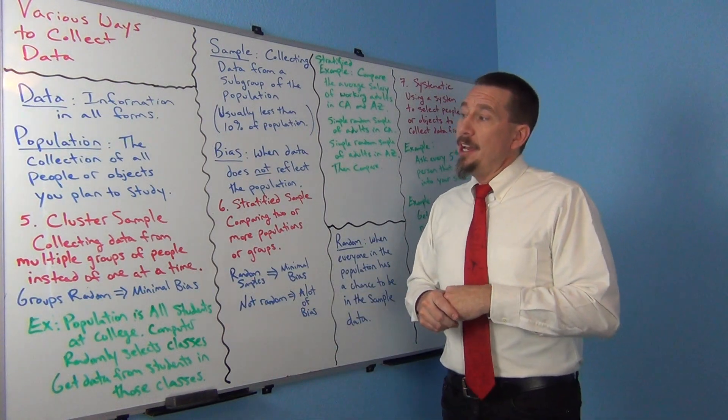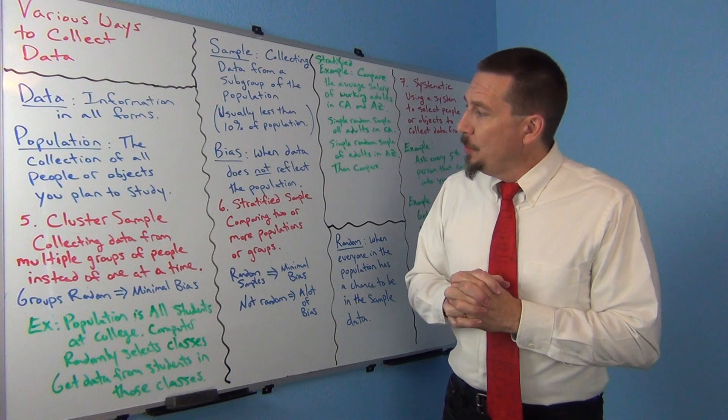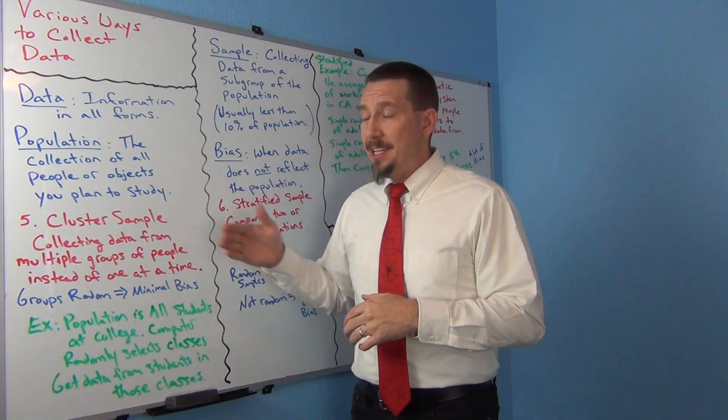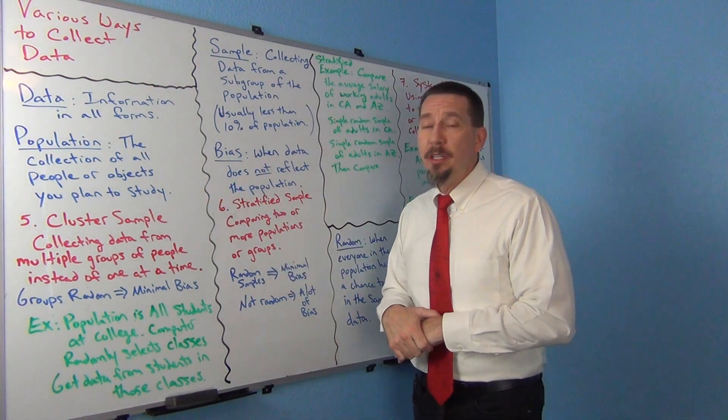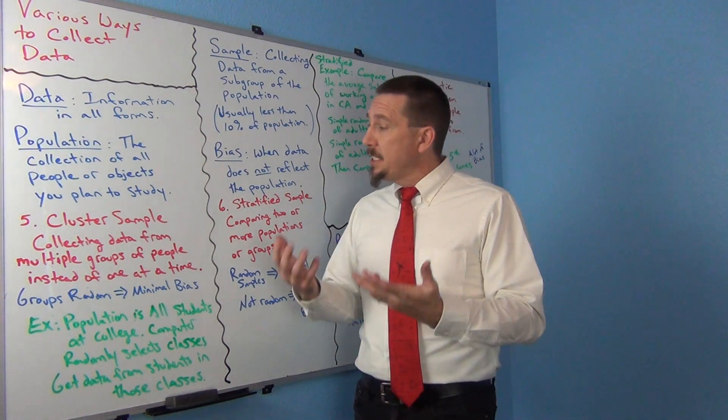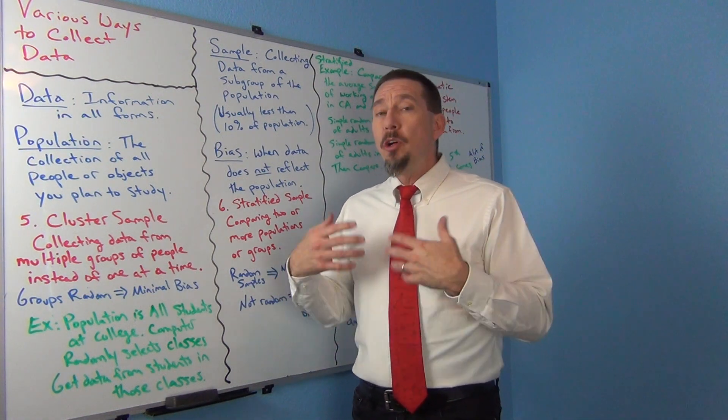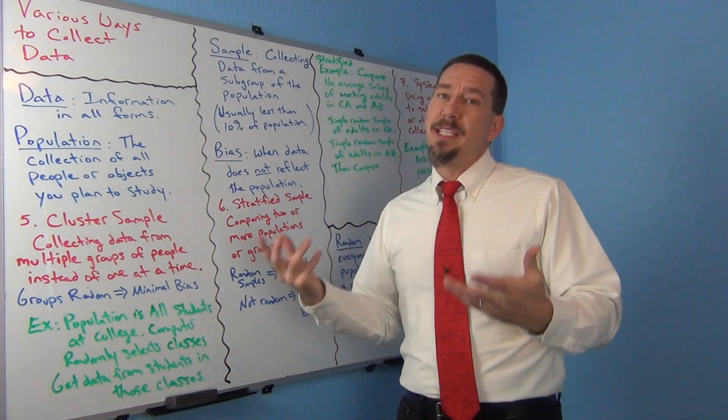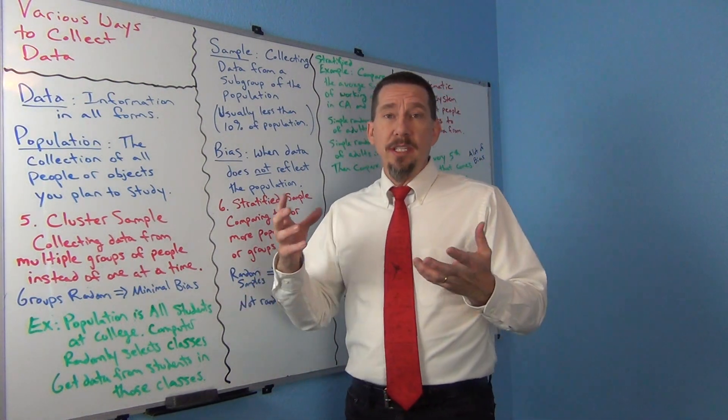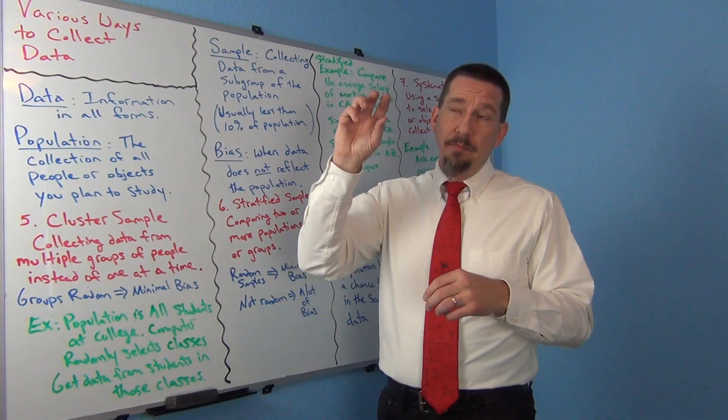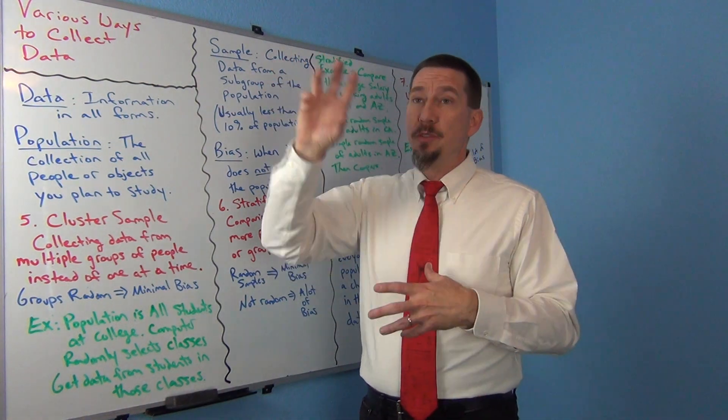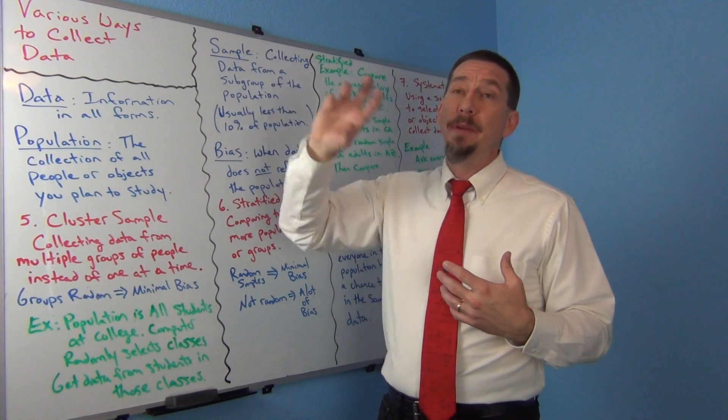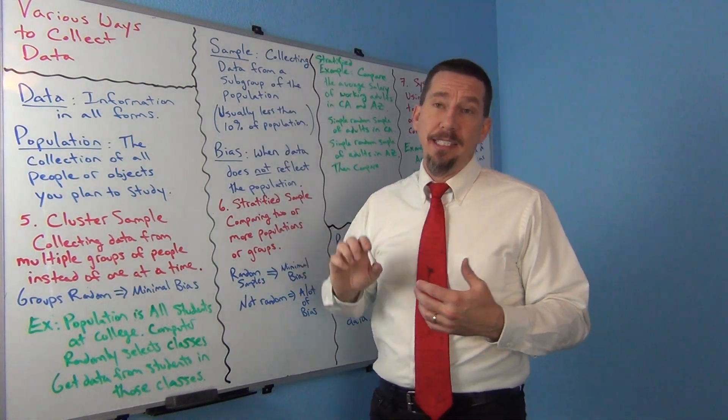We're on method five which is the cluster sample. The cluster sample means you're collecting data from multiple groups of people in your population instead of one at a time. Obviously if you do a simple random sample and you're collecting data from individual people or objects one at a time, it can take a long time to collect data.